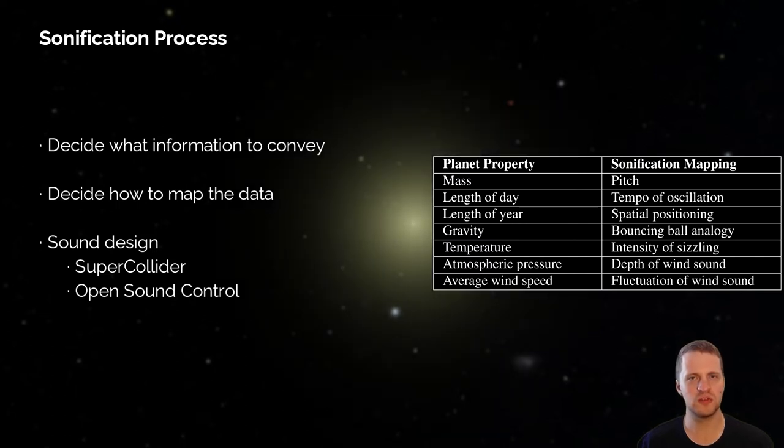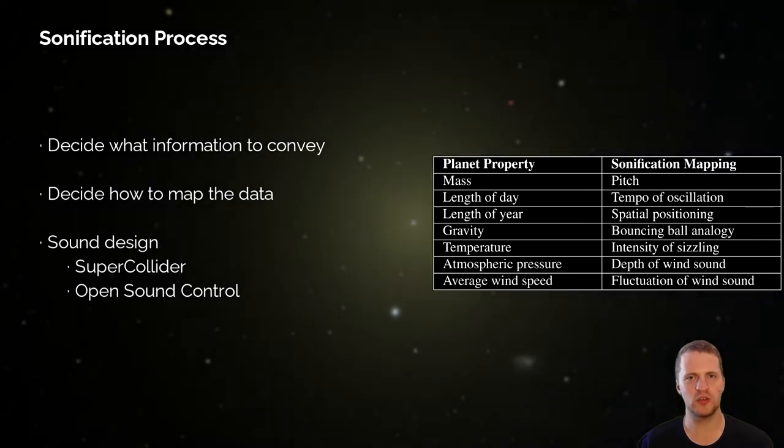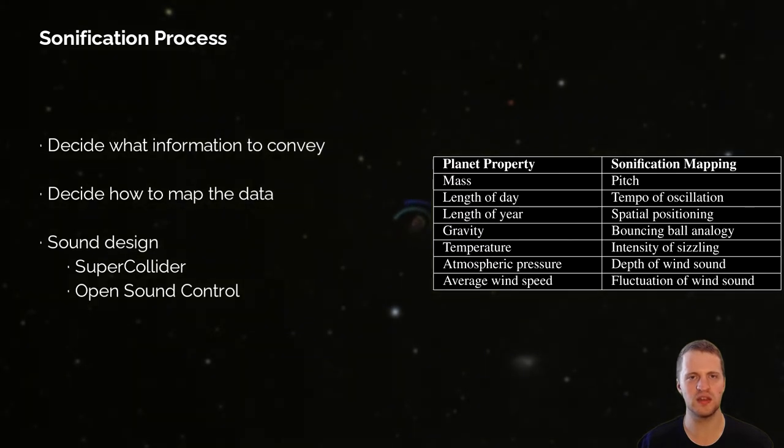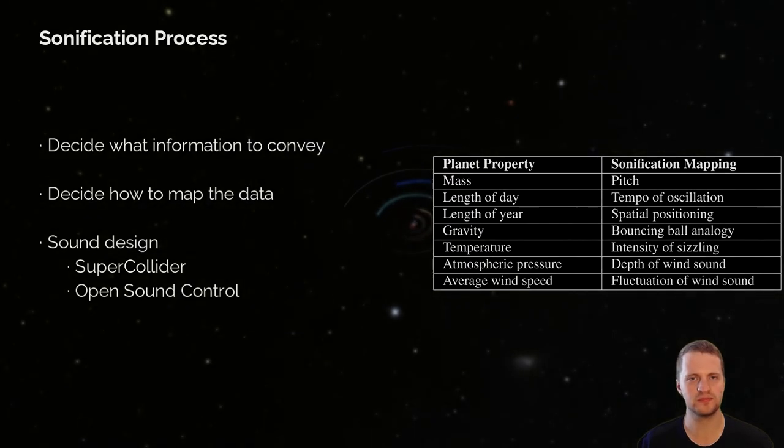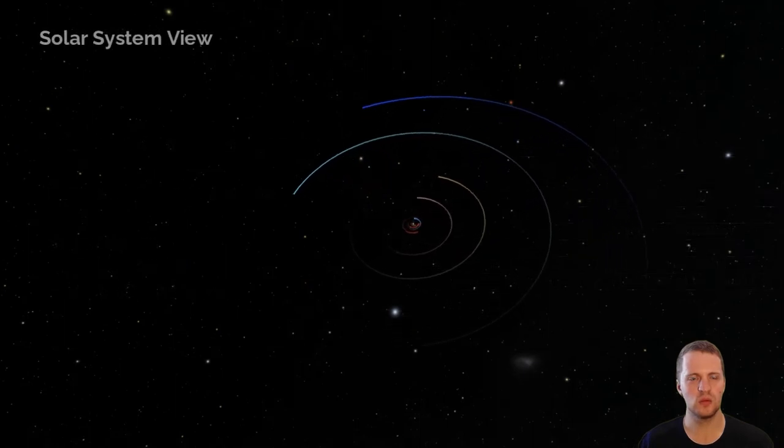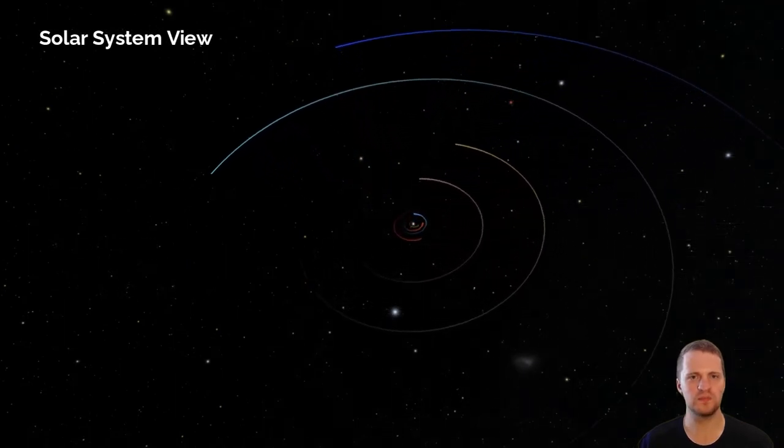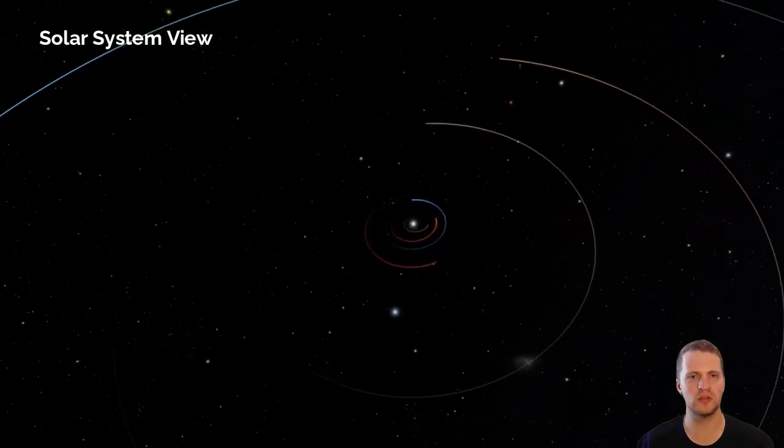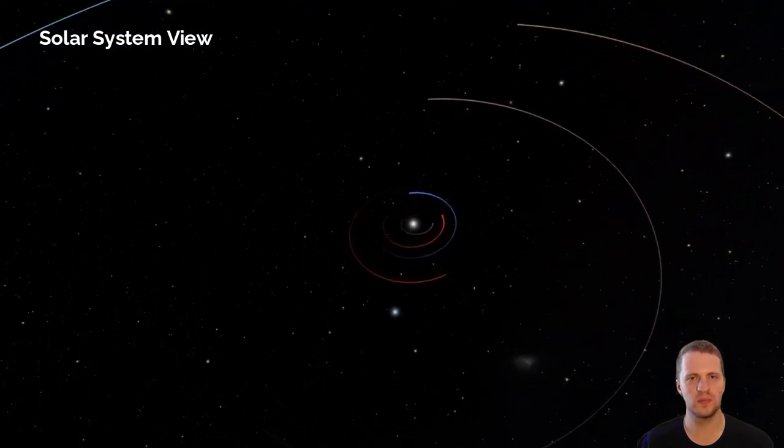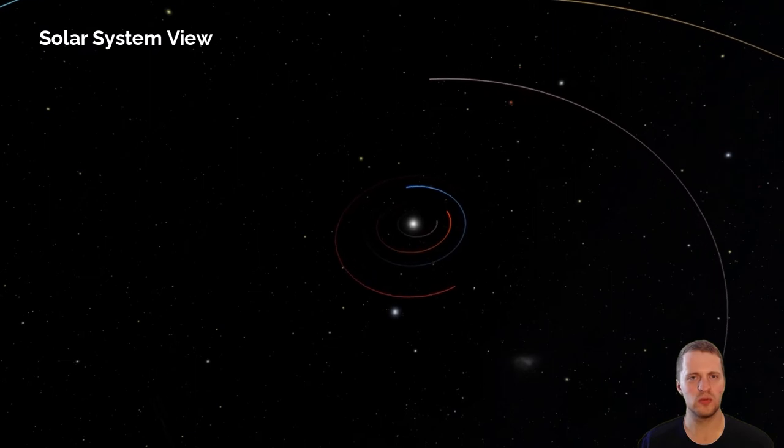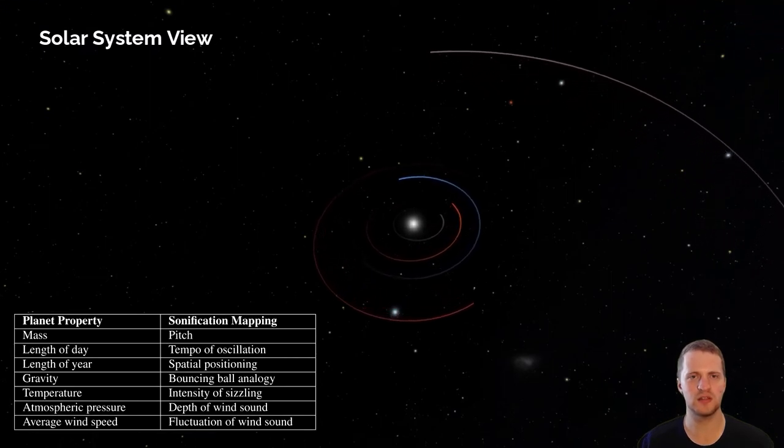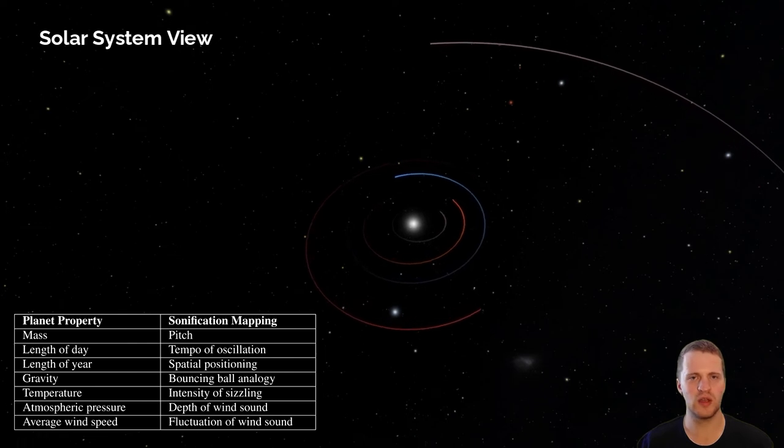The sonification was developed using SuperCollider, and by using Open Sound Control we could obtain positional and temporal information from Open Space and integrate it with the sonification. We have now arrived at our solar system and also to our first preset view, which we fittingly call the solar system view. This works as an overview both visually and audibly, where the first three sonifications in the list can be heard, which I will now describe and demonstrate.